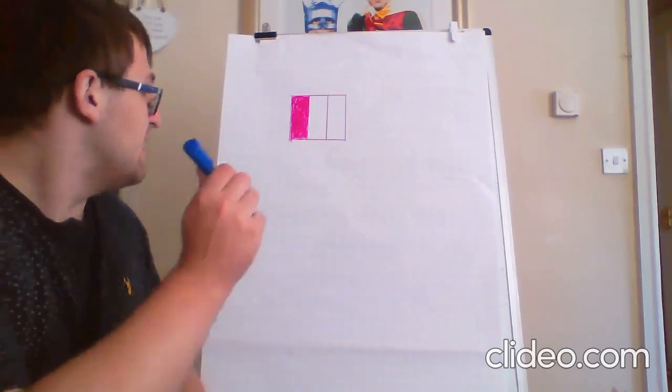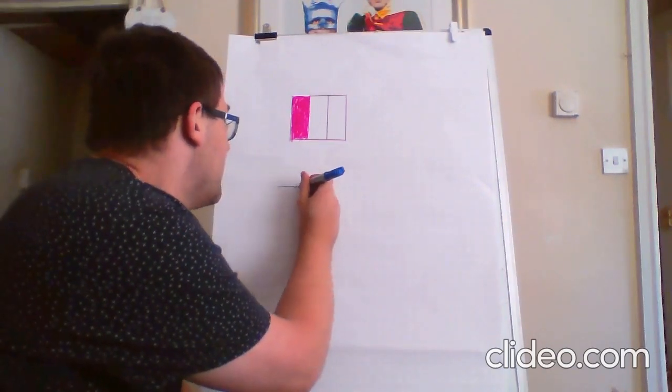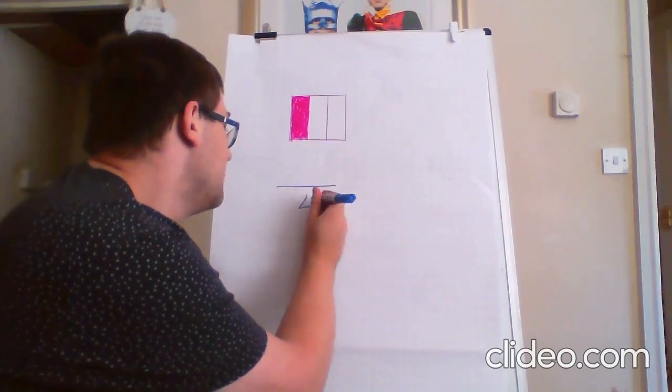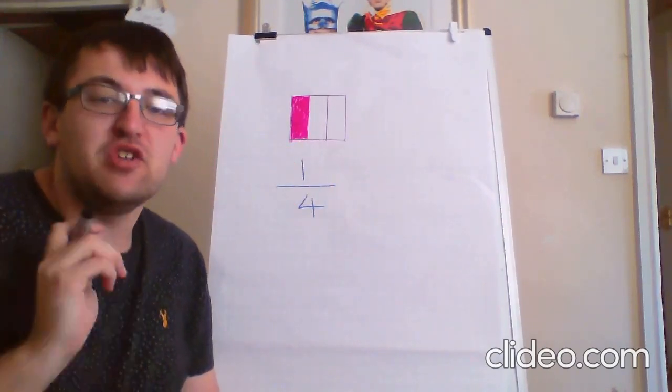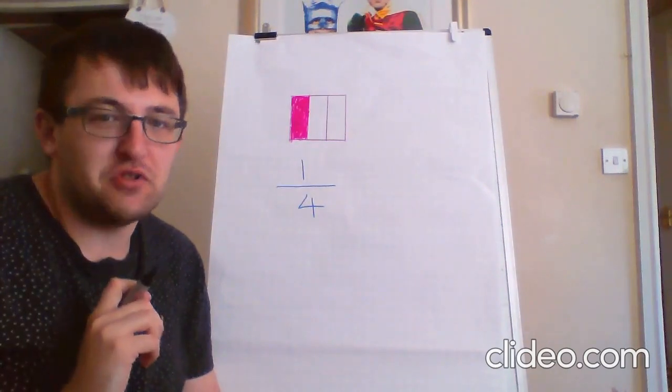A unit fraction is any fraction where the numerator is 1. And if you remember correctly, the numerator is on top of the fraction.